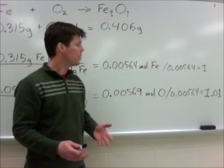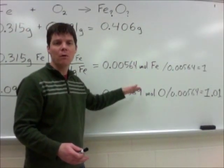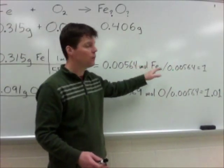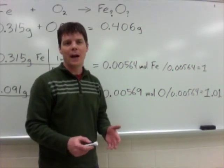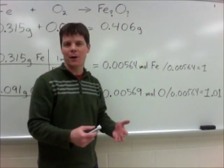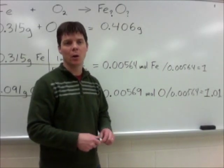So now I've finished the final part of the calculation. I divided each mole value by the smaller of the two. So I get a number of one for the iron. The oxygen number worked out to be 1.01. We're just going to round that off to one. So we have a one-to-one ratio here.